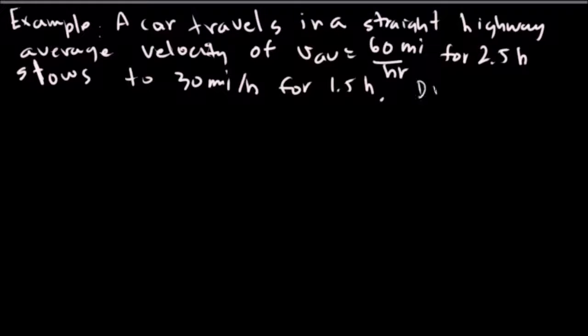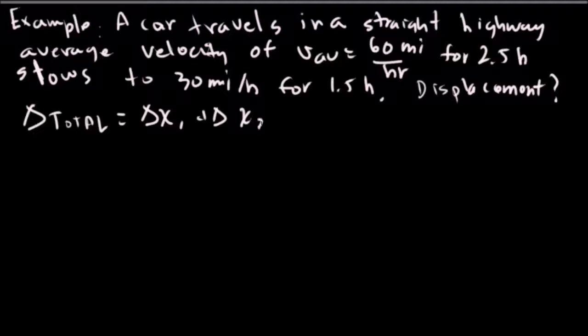So what is the total displacement? How far did this car go? It went for a period of time, 2.5 hours at 60 miles per hour, and then slows to 30 miles per hour for an hour and a half. So our total displacement now is equal to the change in displacement for the first leg of the trip plus the change in displacement for the second leg of the trip. So that's breaking that down from our previous example. That's V average for the first part of the trip times the amount of time we traveled in the first part of the trip, plus V average 2 for the second interval of time that we traveled.